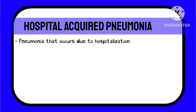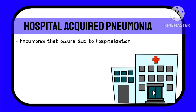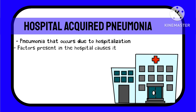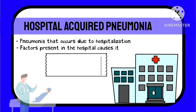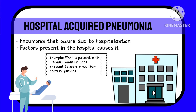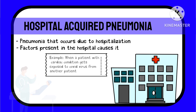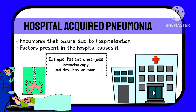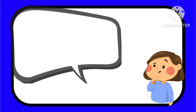Hospital acquired pneumonia, on the other hand, is pneumonia which occurs due to hospitalization — in the sense that due to some factors present in the hospital, the person gets infected with a microorganism which causes the problem. A simple example would be when a person with a cardiac condition and no respiratory infection gets exposed to COVID droplets of another patient or healthcare worker, or when a patient undergoes bronchoscopy and suddenly develops pneumonia.